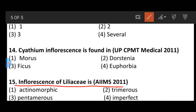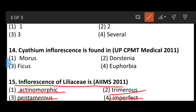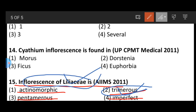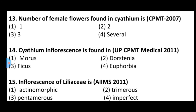Question number fifteen: The inflorescence of Liliaceae is actinomorphic, pentamerous, trimerous, or imperfect? The correct answer is trimerous — the inflorescence found in Liliaceae is trimerous. These are the 15 most important multiple choice questions based on inflorescence, helpful for NEET and other competitive exams. Thank you.